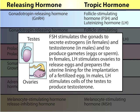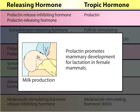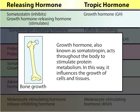In females, LH stimulates ovaries to release eggs and prepares the uterine lining for the implantation of a fertilized egg. In males, LH stimulates cells of the testes to produce testosterone. Prolactin promotes mammary development for lactation in female mammals. Growth hormone, also known as somatotropin, acts throughout the body to stimulate protein metabolism, influencing the growth of cells and tissues.